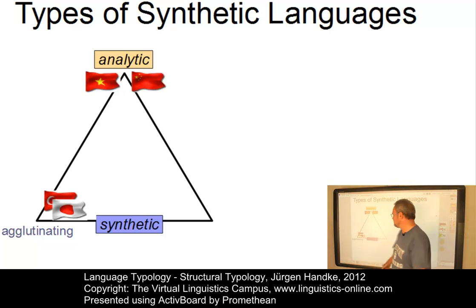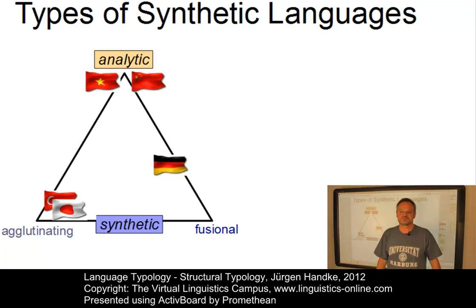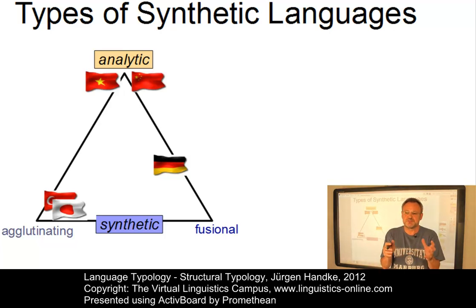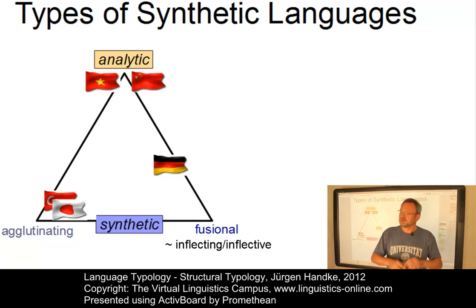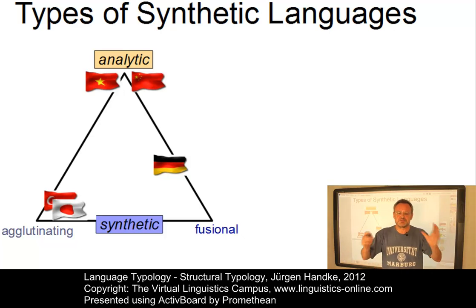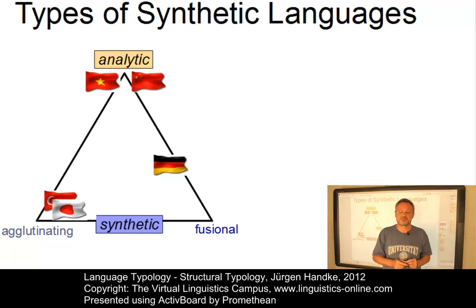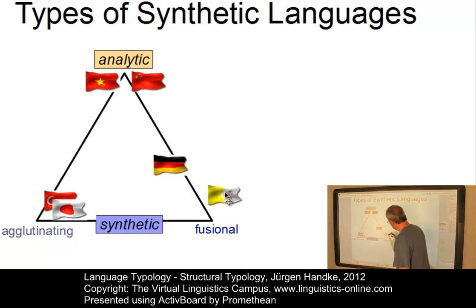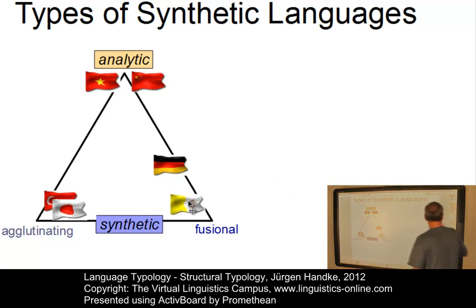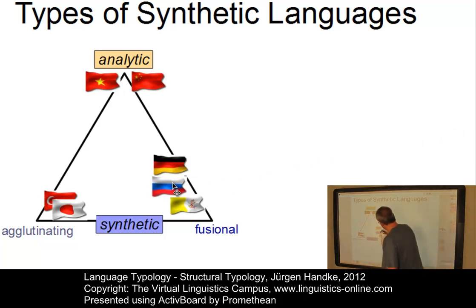The agglutinating languages can be contrasted with the fusional languages, such as German. Here, the dependent morphs often have several grammatical functions associated with them. In fusional languages — some people refer to them as inflecting or inflective — there are no clear-cut boundaries between morphs, and several grammatical properties are often fused together to give a single, unsegmentable morph. Most Indo-European languages are fusional — for example, Latin, which is highly synthetic, is fusional in many ways. Russian is also fusional, perhaps less synthetic than Latin but more synthetic than German.